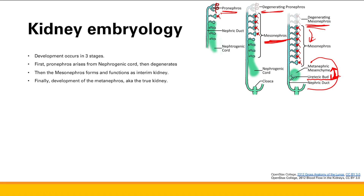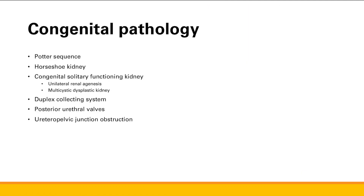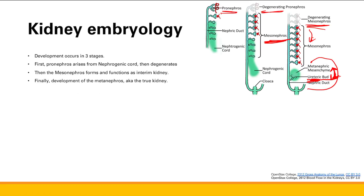If you look at the names, you can tell what the ureteric bud and the metanephric mesenchyme are going to become. The ureteric bud — focus on that word 'ureter' — it's going to be basically the connecting system of the kidney: the collecting tubules, ducts, major and minor calyces, renal pelvis, and ureters. We'll talk more about anatomy later, but it's the stuff that's not the parenchyma of the kidney — it's where all the urine is going to drain out.